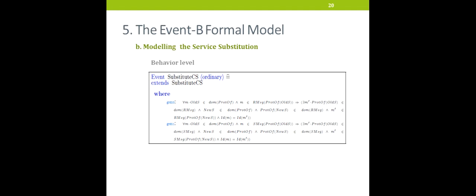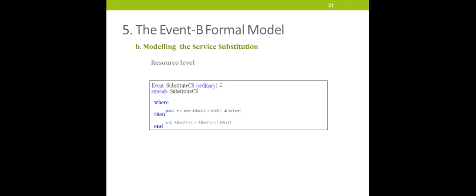We move now to the behavior abstraction level, where we find the substitute_CS event to check the interacting protocols. For each message that will be sent to the composite service, there must be a component service that will respectively receive or send that message. The protocol of OldS and the protocol of NewS must have the same number, type, and order of messages, expressed in guards 10 and 11. Cloud resources are managed in the resource level. The set of resources allocated to OldS are released, and after its selection, the allocate_resource event will be triggered to allocate resources to the new component service.